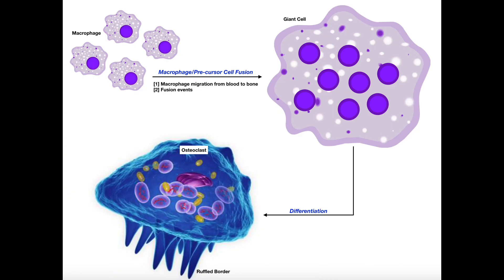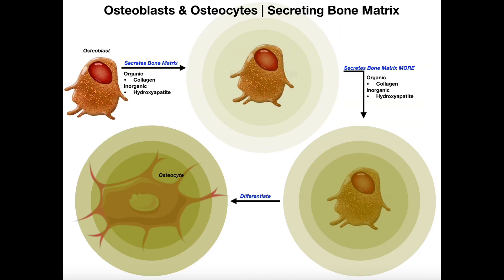Now we're going to transition to a new cell type called an osteoclast. This cell type is not derived from the same lineage as osteoblasts and osteocytes. Osteoblasts come from a precursor called an osteoprogenitor cell, which differentiates into an osteoblast, and then into an osteocyte. The osteoblast functions in secreting the matrix that makes up bone tissue — that process is called bone deposition.